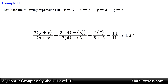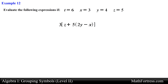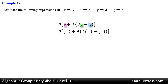So how about the following expression: 3 times the quantity [z plus 5 times the quantity (2y minus x)]. This is a perfect example of an expression containing nested grouping symbols. We have brackets, and within the brackets we have an expression with parentheses. We work from the innermost grouping symbol to the outermost. We first need to take care of 2y minus x, substituting z equals 5, y equals 4, and x equals 3.